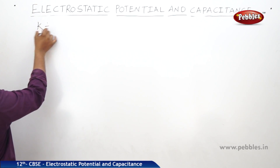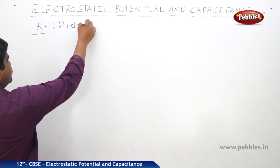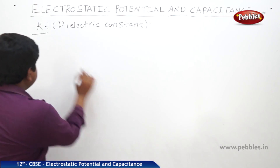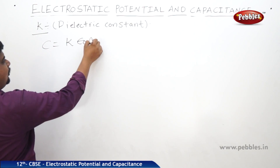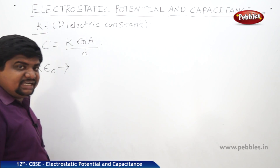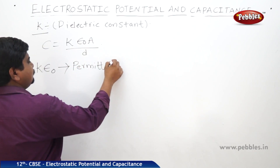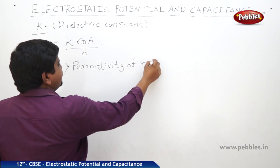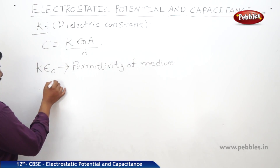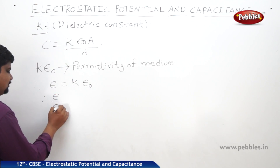What is k? This k is called dielectric constant. How do we define k? The expression of capacitance C is k times epsilon naught times A divided by d. So k times epsilon naught is the permittivity of the medium. The original symbol for permittivity of the medium is epsilon. Therefore, we can equate epsilon equals k times epsilon naught, and so epsilon divided by epsilon naught equals k.